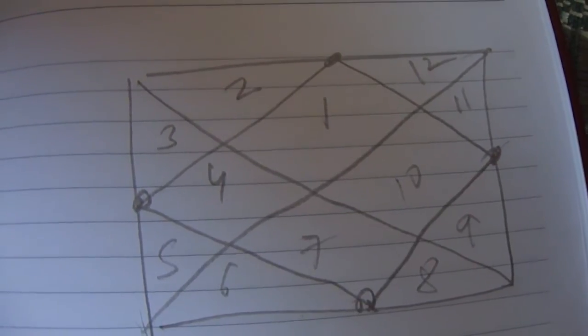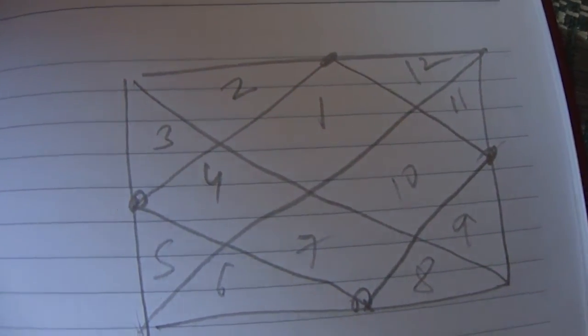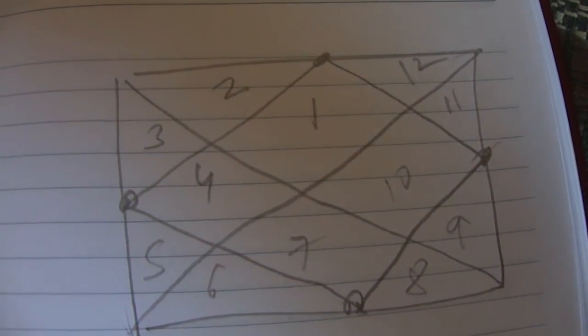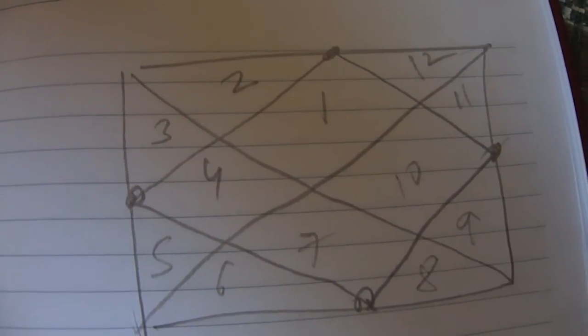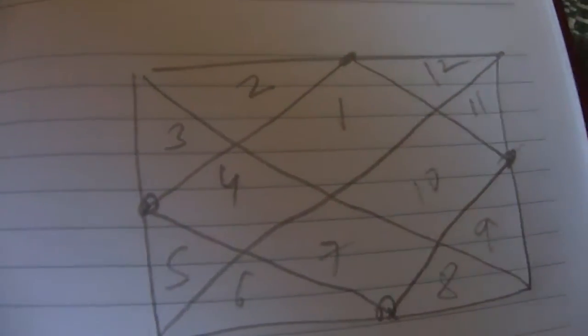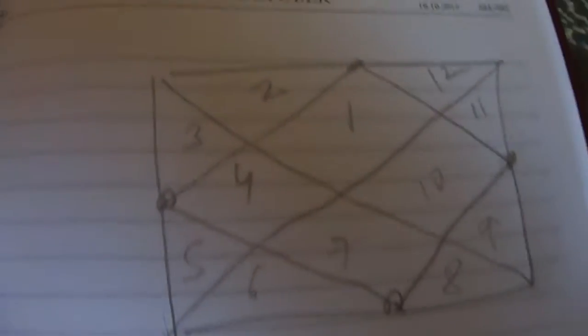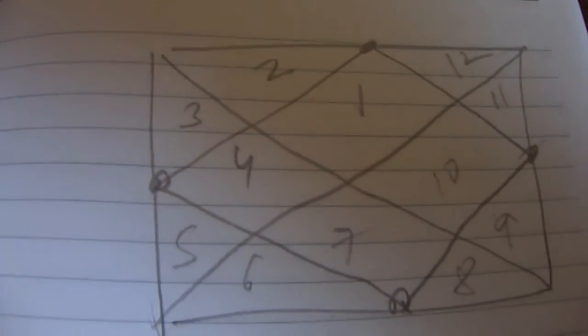Now we understand that 9th house is all about this. Now what happens when Mercury comes here? So we will be going planet by planet and I will be just giving an example and then we will be trying to develop. So Mercury, the planet Mercury can come here. So what happens when Mercury comes in the 9th house?